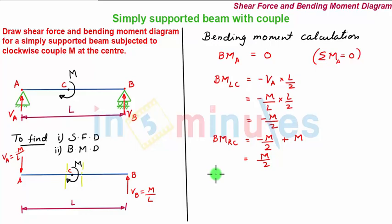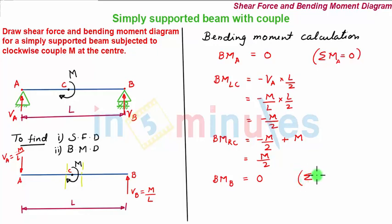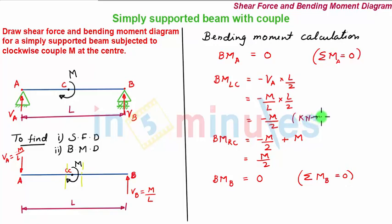Moving the section towards point B, the bending moment at B is the same as at A, which is 0. This can also be deduced using the static equilibrium equation: the summation of moments at B equals 0. Our consistent units will be kilonewton-meter.